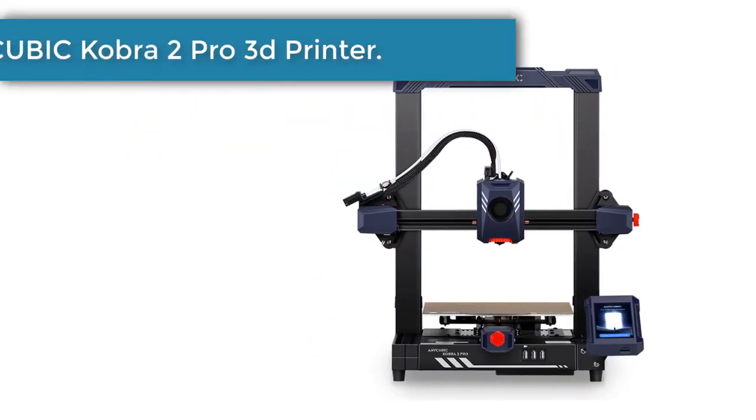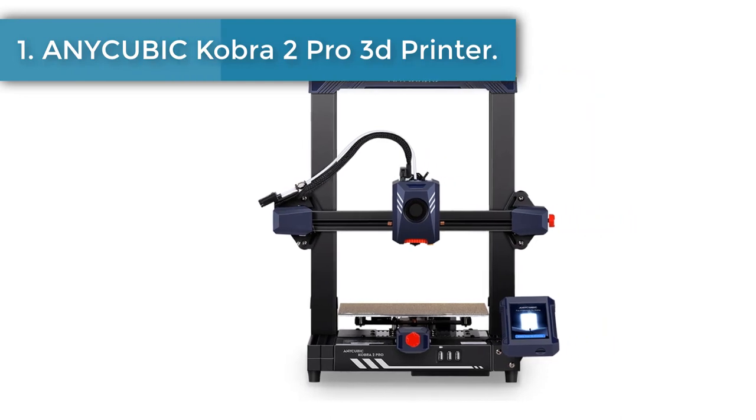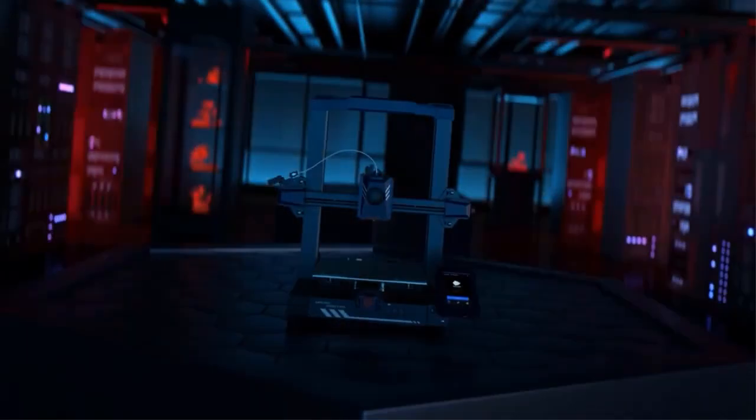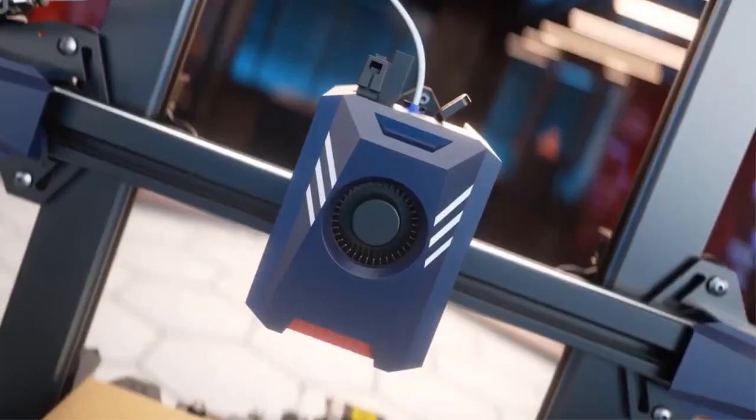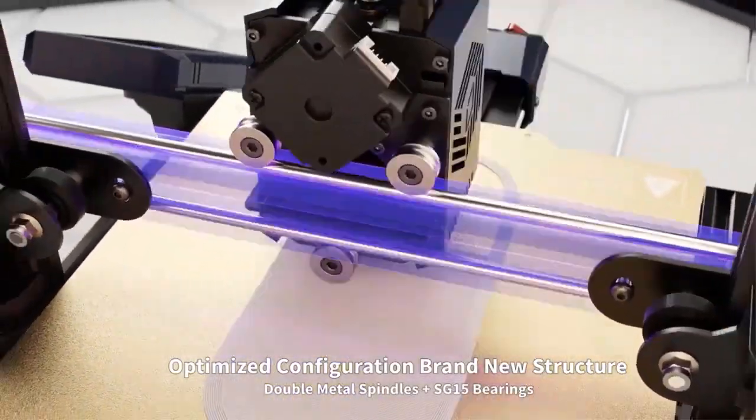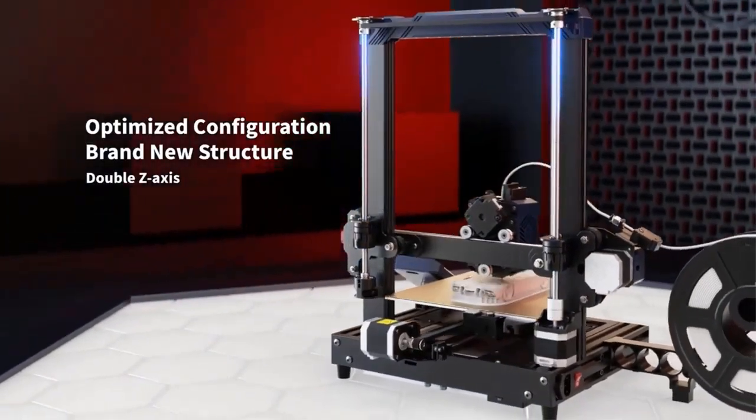Number 1. AnyCubic Cobra 2 Pro 3D Printer. Compared to mainstream FDM 3D printers, the printing speed is increased by 10 times. The maximum printing speed up to 500 mm per second. Recommended print speed is 300 mm per second.